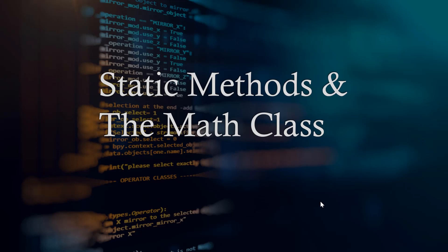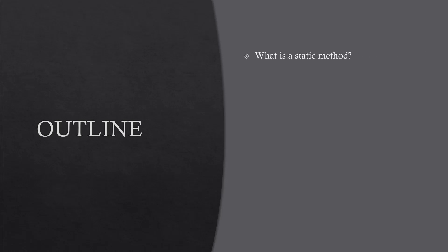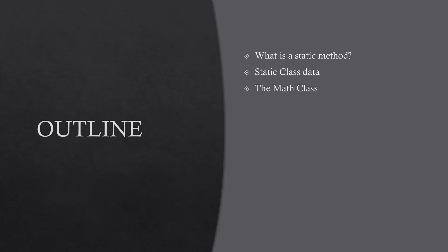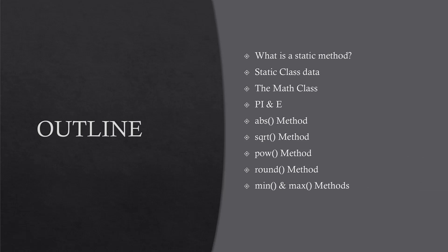In this video, we will look at static methods in Java. We will also look at the Math class, which has multiple static methods we can use as an example. We will start by defining static methods and how to use them, look at static class data, explore static data in the Math class including Pi and E, and look at methods like absolute, square root, power, round, and the minimum and maximum methods.